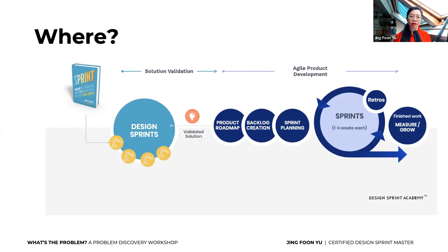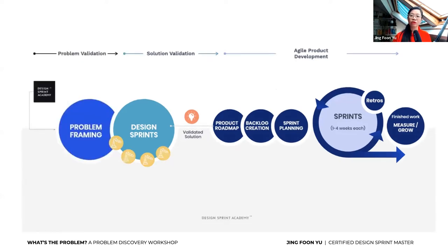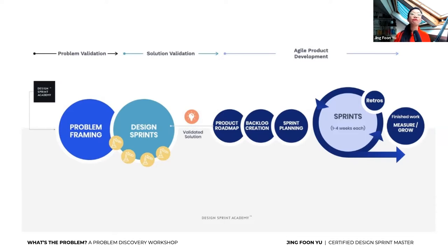Design sprints live before agile product development actually starts, and a problem discovery session comes before a design sprint. Design sprints are solution-focused — they're a solution validation process. A problem discovery workshop focuses on finding the right problem to solve — it's a problem validation process. Sometimes people also call it a problem framing workshop.